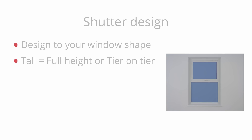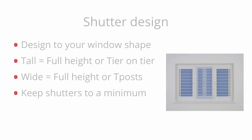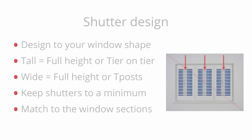To recap, when choosing a design for your window, base it around your window shape and size. If you have a tall window, a full height or tier on tier design would be good. If your window is wide and short, then full height or a t-post design would be more suitable. Keep the number of shutters or folds to a minimum, and ensure you match the number of shutters to the number of sections in your window.